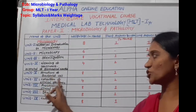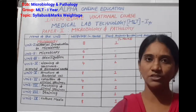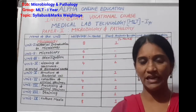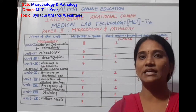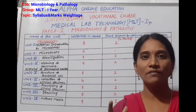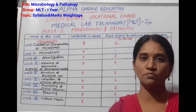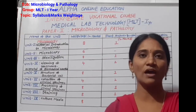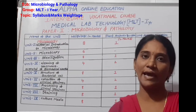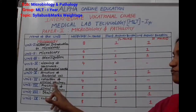Unit 6 is Collection of Clinical Specimens. We collect patient samples such as urine, blood, sputum, and stool. This unit covers what samples we collect, the collecting process, and the collecting time — when to collect and what to collect.